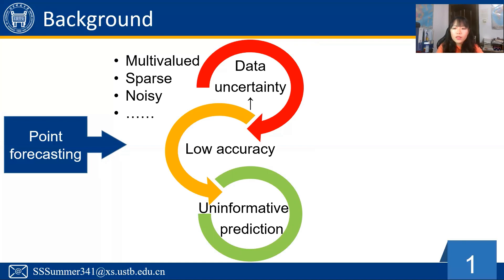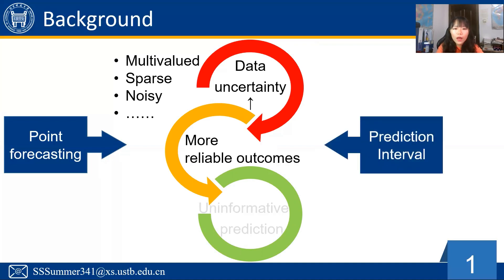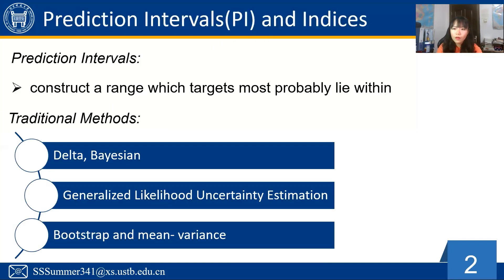Compared with the limited results of point forecasting, prediction intervals perform better due to their good quality of providing more reliable outcomes and quantifying accuracy. Prediction intervals mean constructing a range within which targets most probably lie. Several traditional methods of constructing PIs are delta, Bayesian, generalized likelihood uncertainty estimation, bootstrap, and mean variance.